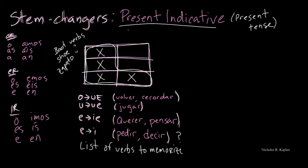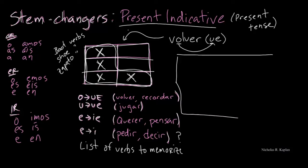So let's look at an example. Let's look at Volver. And sometimes you might see it written like this in your book. And this means that that O changes to a UE. But remember, it only changes in the places where we have the X. All right, so let's go ahead and put in our box of 6 right here.